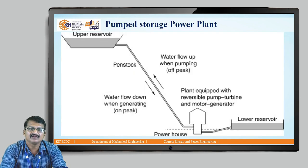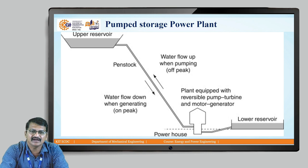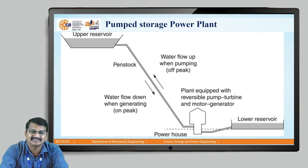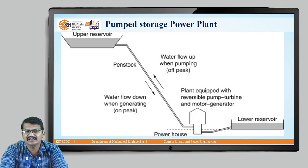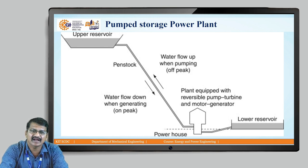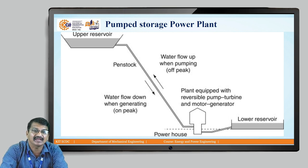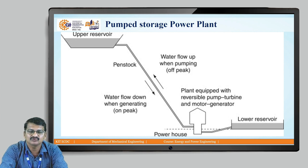There is a major constraint in front of us: we cannot store electricity directly. If it were possible, we could generate more and more power in the rainy season in a hydroelectric power plant, store the energy, and utilize it in summer. But it is not possible. So instead, in a pump storage power plant, we store water in the upper reservoir — we store water, not electricity.